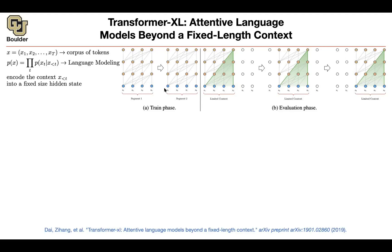Now you go to the next segment. Somebody gives you a new portion of your text. You take it, push it through your network, do your predictions and your training. When you go to evaluation and testing, the task is you want to predict X5, the next word, given the previous words.